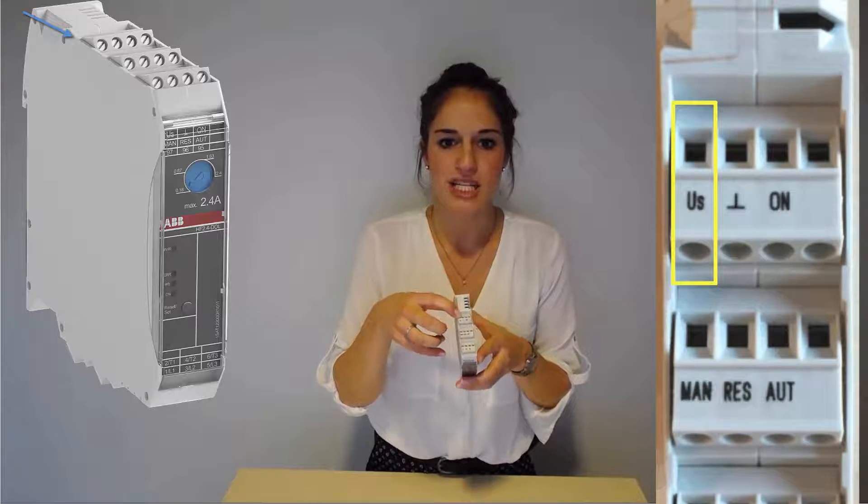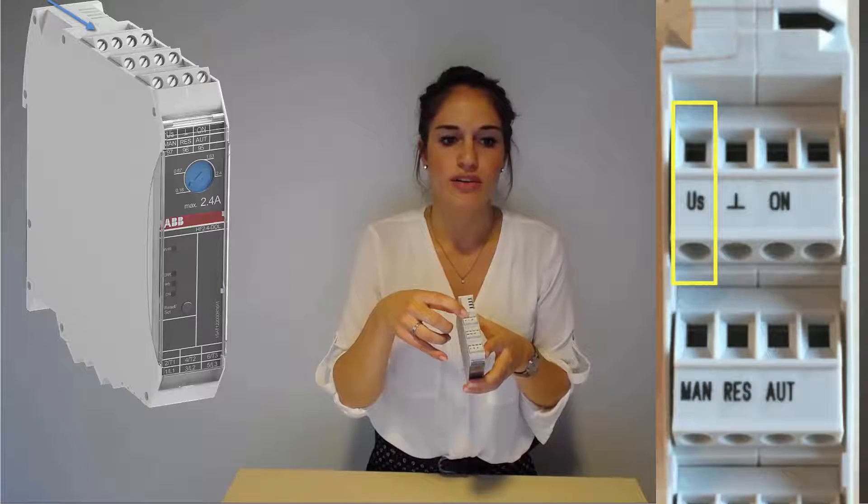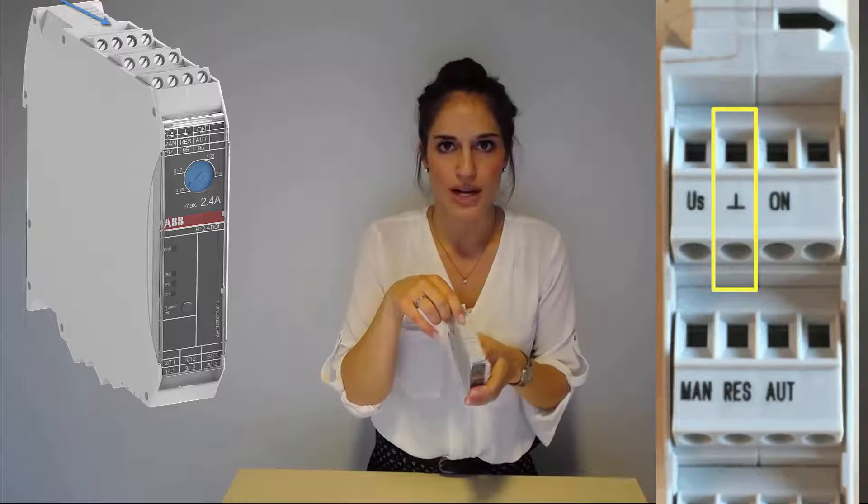Terminal U-S supplies the HF range with 24V DC. It has to be connected with a 24V DC power supply. Its reference potential is the terminal right next to it.